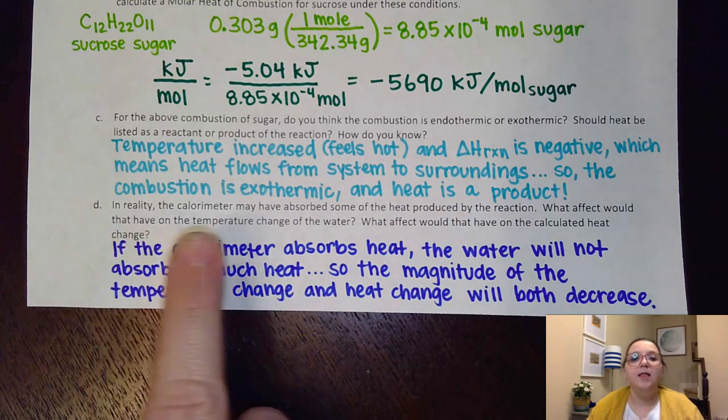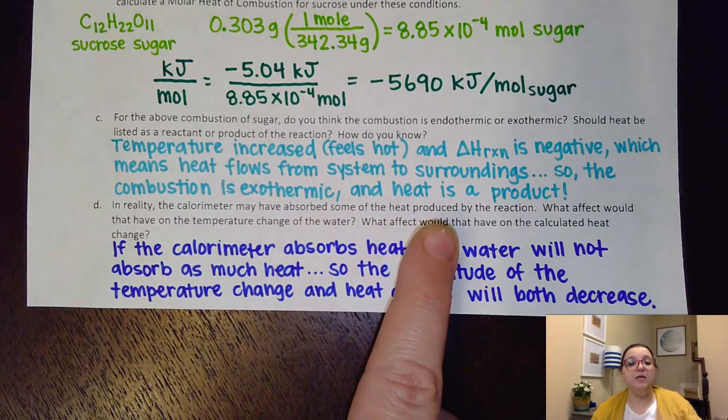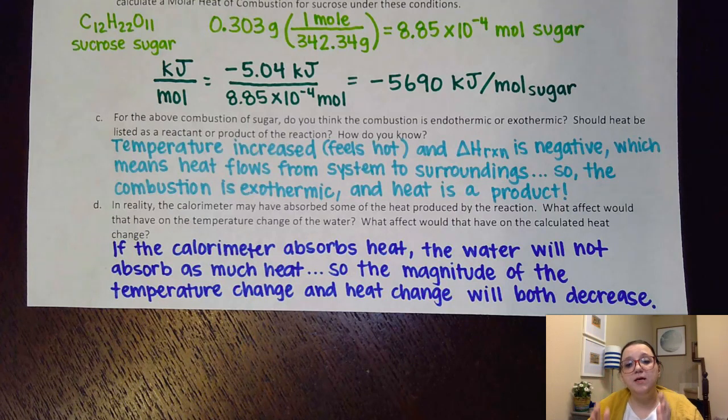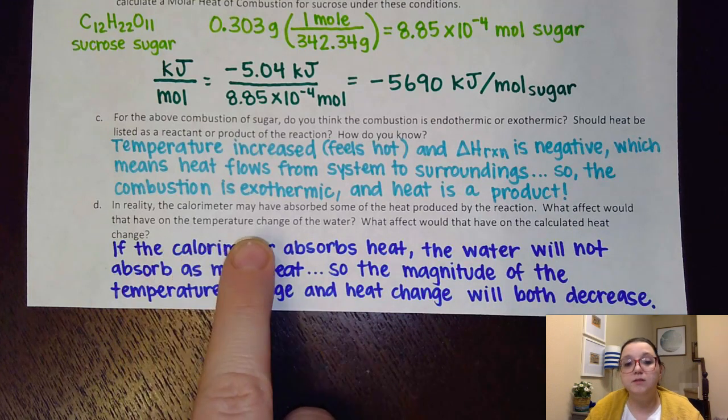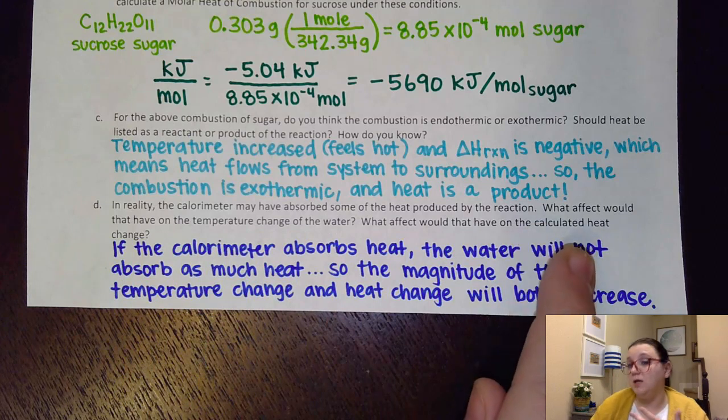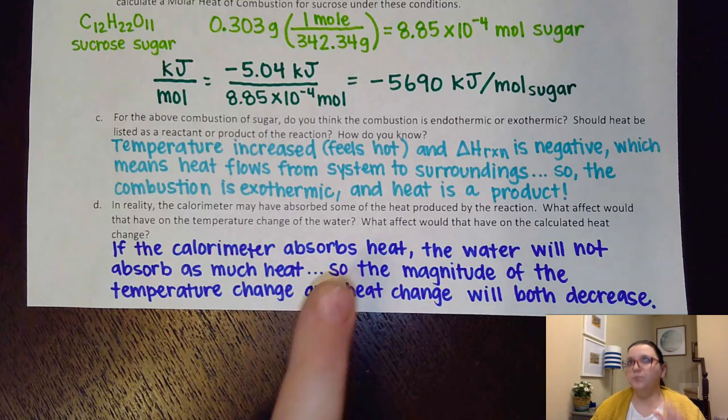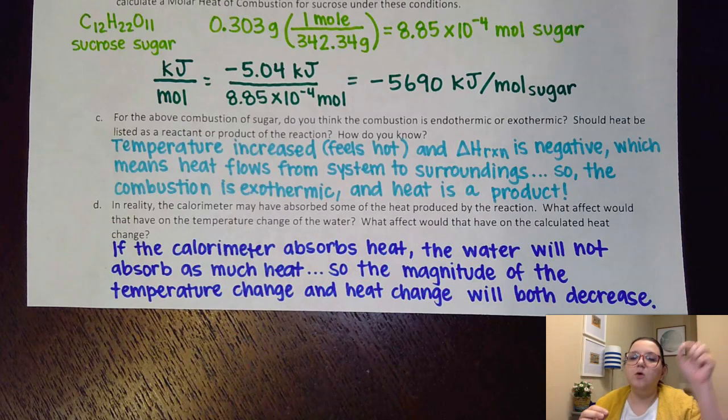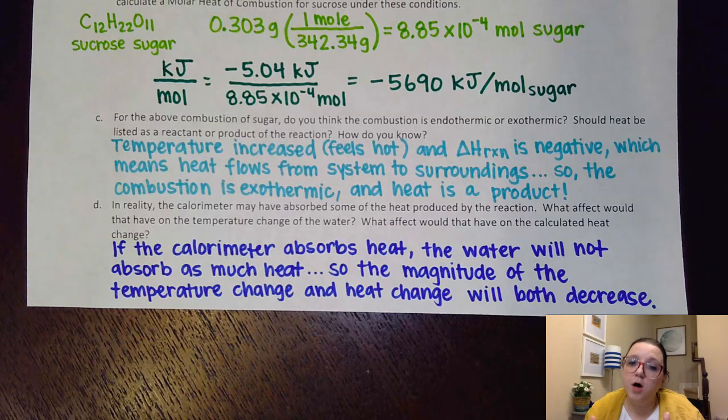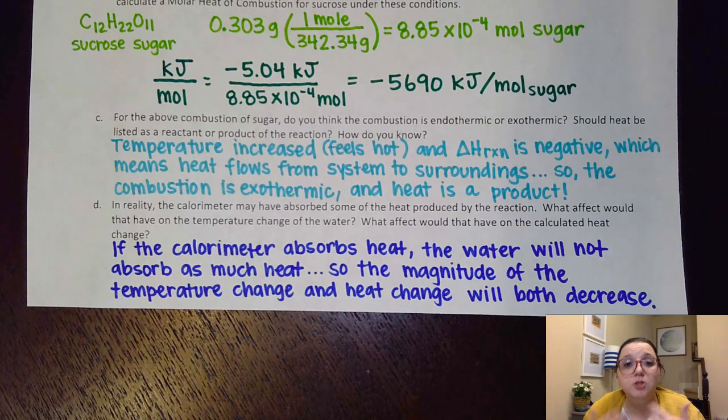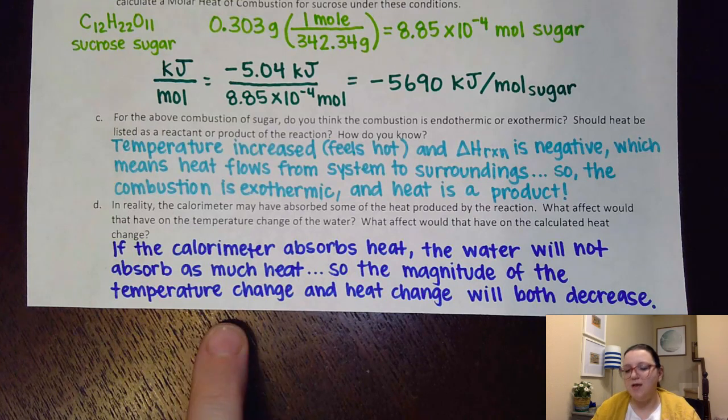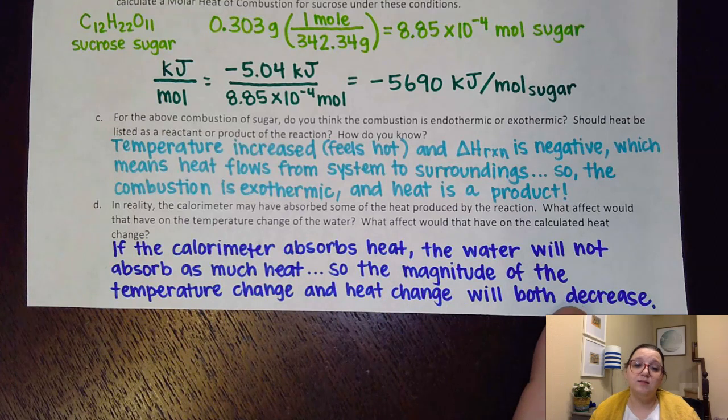One more question here. It says, in reality, let's be real, the calorimeter itself may have absorbed some of the heat produced by the reaction. Even on a bomb calorimeter, there's a chance that that insulated container could absorb a little bit of heat. And so, what it asks us here is, what effect would that have on the temperature change of the water? And then, what effect would that have on our calculated heat change? So, it says here, if the calorimeter absorbs heat, what that means is all the heat I'm releasing is not going to the water. Most of it's going to the water, but there's a little bit going to calorimeter itself. So, if not all the heat is going to the water, then that means that that water is not absorbing as much heat as it really should be if it's getting all of it. And so, what happens is that we don't see quite the temperature change that it should have gotten. And if that magnitude of the temperature change is less, then the heat change I calculate will be less as well.